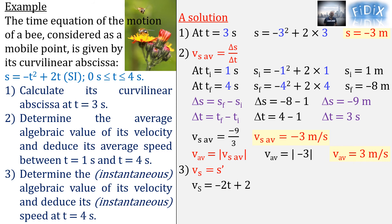So, we differentiate s to get v_s at any instant t. Then, we replace t by the given value in the obtained equation of v_s, 4 seconds in our case, and get the answer, v_s equals minus 6 meters per second.